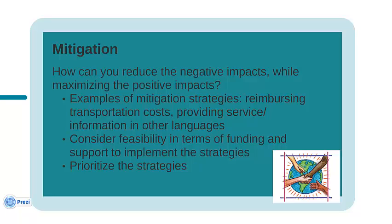After you have identified the unintended impacts, think about the mitigation strategies that will maximize the positive impacts and minimize the negative impacts of your program or policy. For example, think about how to reduce or eliminate barriers to access related to factors such as transportation, childcare, or language. At this stage, it is important to keep in mind the feasibility of the mitigation strategies that you have identified. Think about the resources you will need — consider factors such as funding, support from senior-level decision-makers, and staff commitment. If you have identified a long list of mitigation strategies, you may want to prioritize these based on feasibility or the degree to which they address the unintended impacts. Don't forget, feedback from the identified population groups may be highly beneficial at this step.